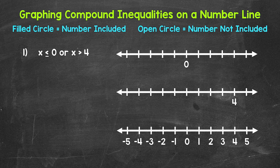Let's start with x is less than or equal to 0 and just focus on that. Now 0 is included, so we need a filled circle at 0, and then an arrow going left representing everything less than 0. So 0 is a solution and anything less than 0.